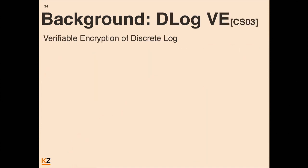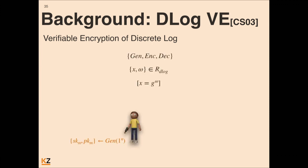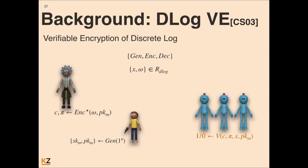The second background concept is D-log verifiable encryption, based on a fantastic paper from 15 years ago by Camenisch and Shoup. We have an encryption scheme and a D-log relation — specifically an elliptic curve D-log relation, which is relevant for blockchains. A party generates a private key and public key. Then an encryptor, with a special encryption protocol, takes a witness and outputs a ciphertext and a proof. The proof is publicly verifiable, showing that the ciphertext is indeed an encryption of the specific witness of this D-log relation. Later, the party can run a special decryption protocol on the ciphertext using his private key and get back the witness.